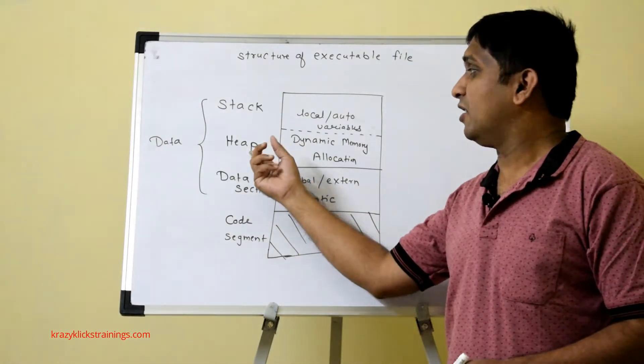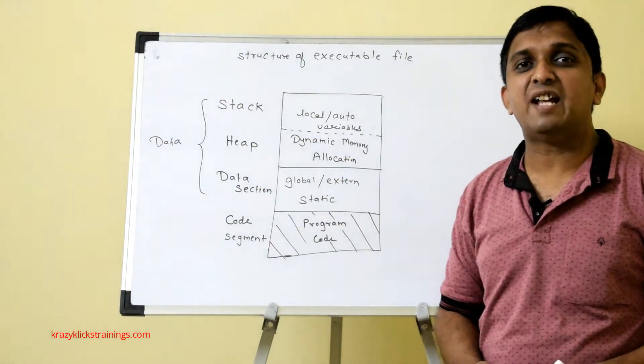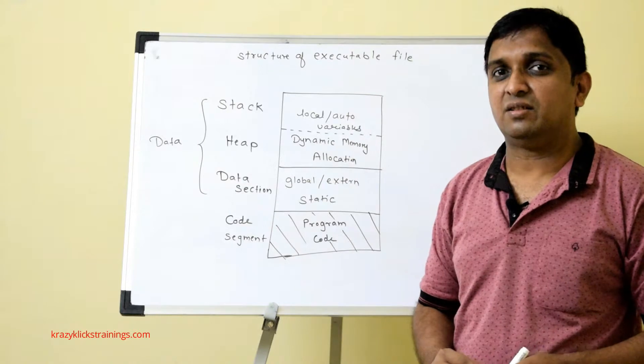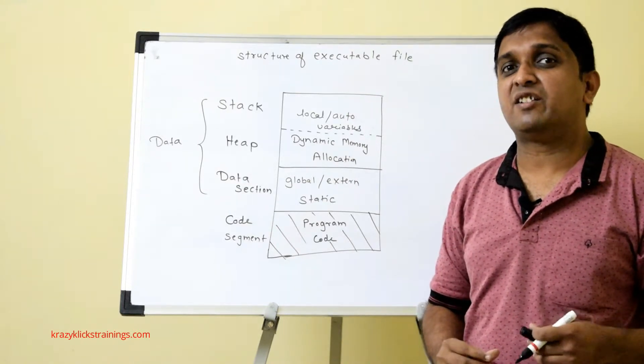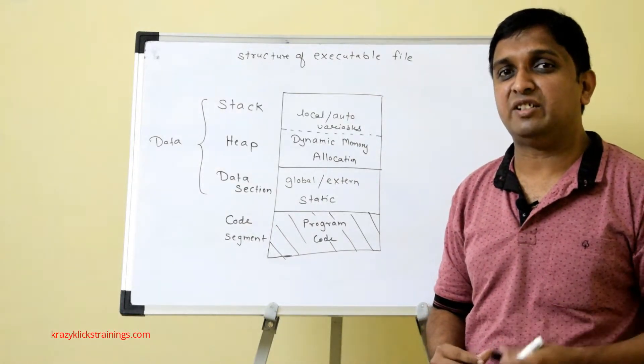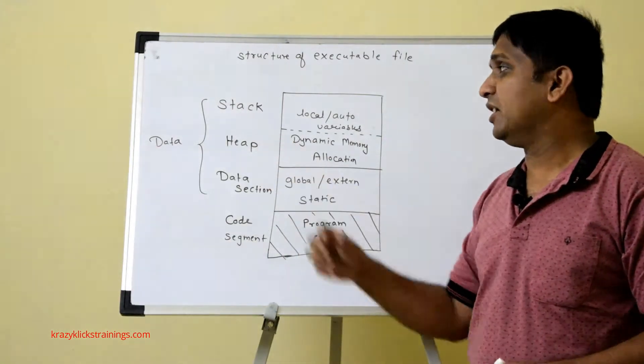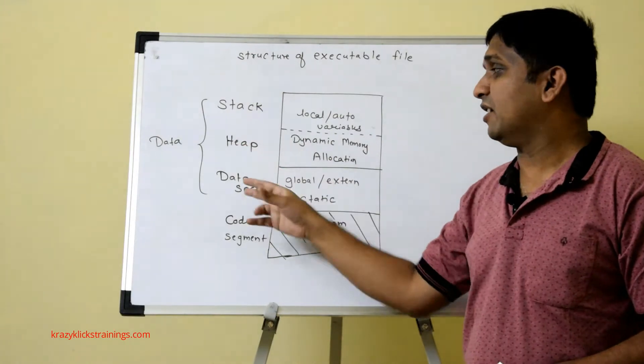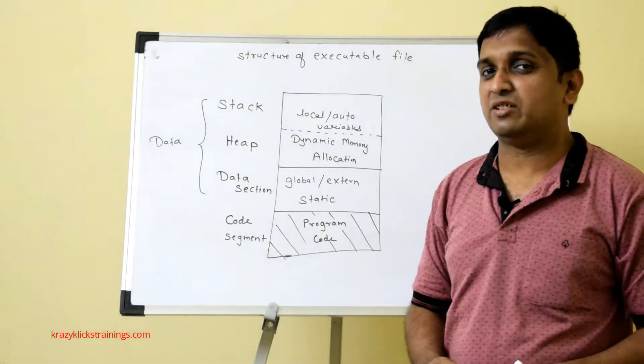This particular part which is heap is reserved for dynamic memory allocation. We will see dynamic memory allocation in further topics where there are functions like malloc, calloc, realloc. That happens onto the heap. You will remember these three parts - stack, heap, data section - as far as memory allocation is concerned.